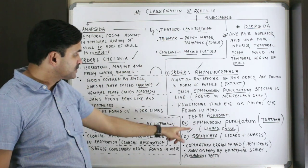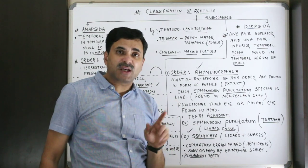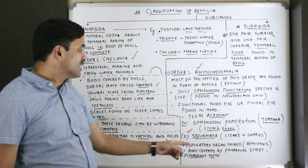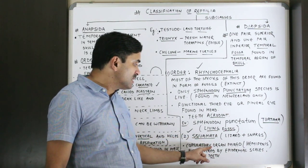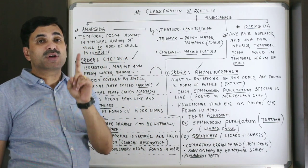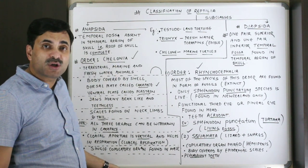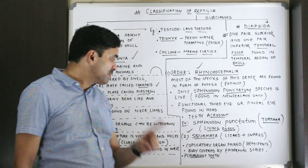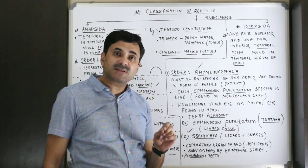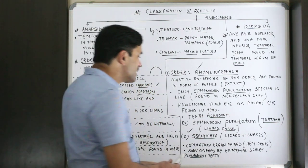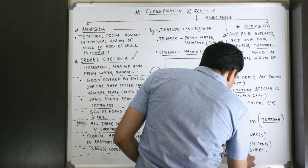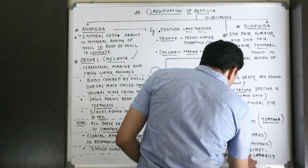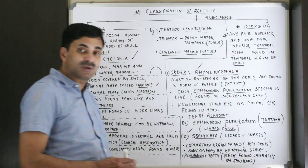The most important order of subclass Diapsida is Squamata — the largest order. All lizards and snakes found on earth are included in this order. The copulatory organ is paired here, known as the hemipenis. The body is covered by epidermal scales, and teeth are pleurodont — meaning teeth are found laterally on the jaw bone.